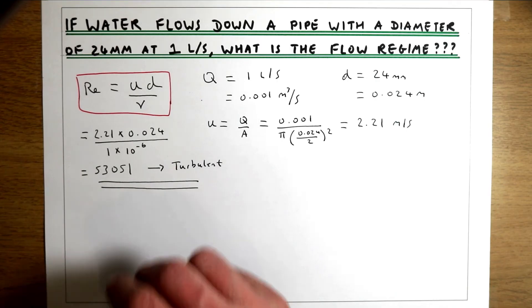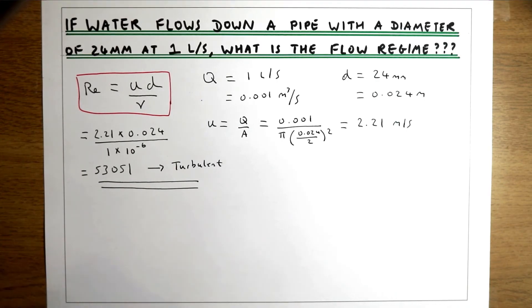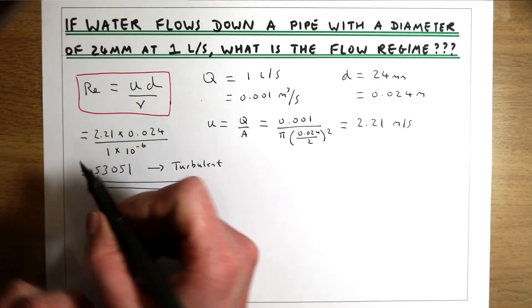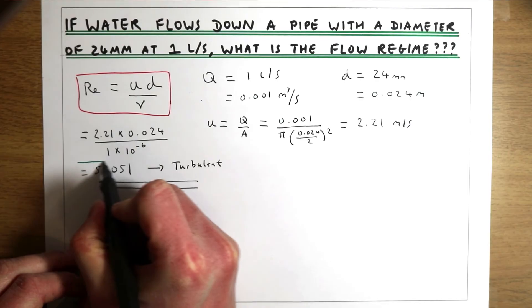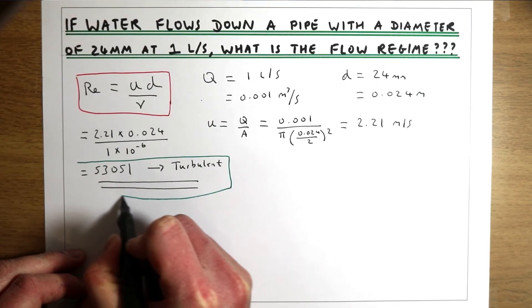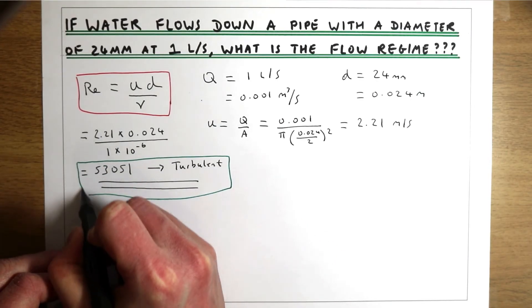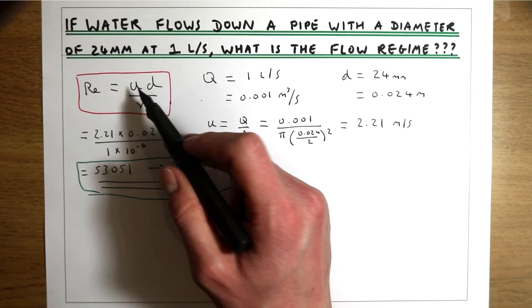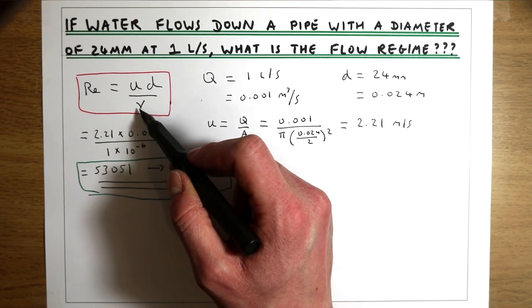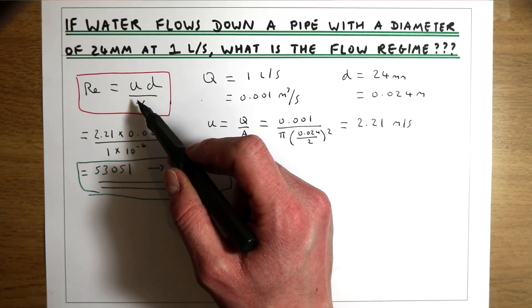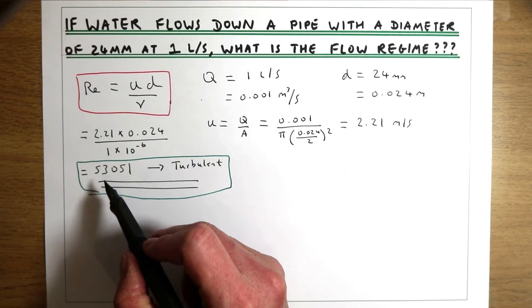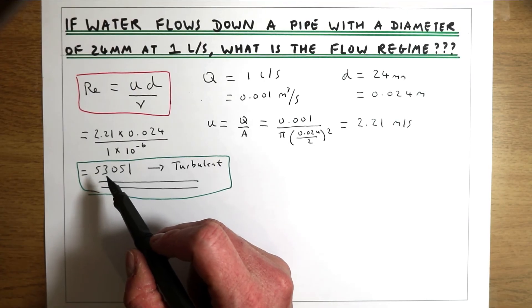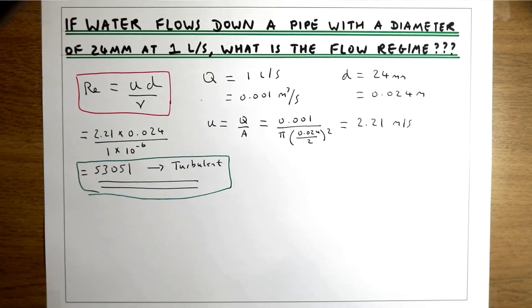So what we've done is taken the parameters given — the flow rate and the diameter of the pipe — worked out the velocity, put those terms into the Reynolds number equation, and seen that it's more than 4000, which tells us the flow is going to be turbulent.